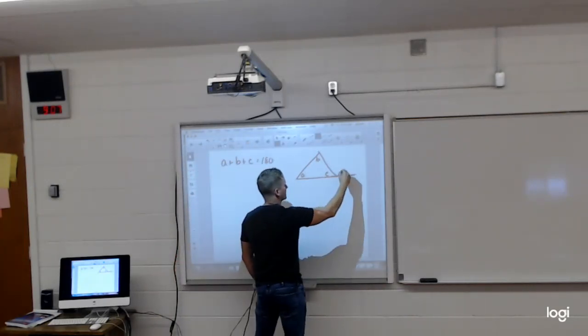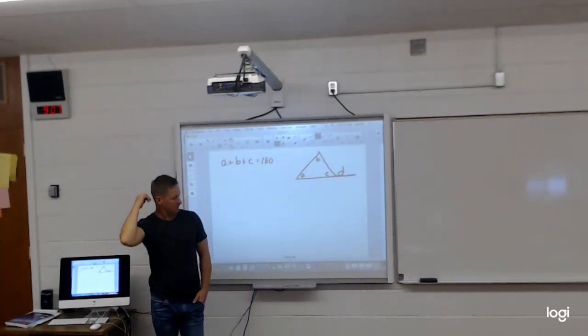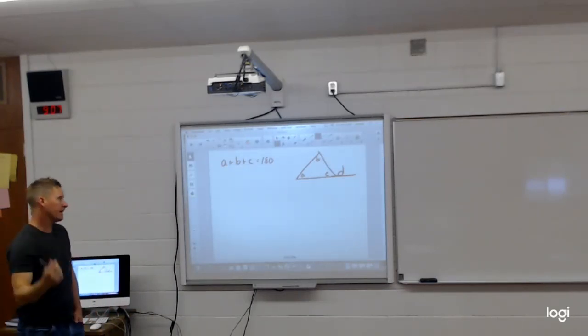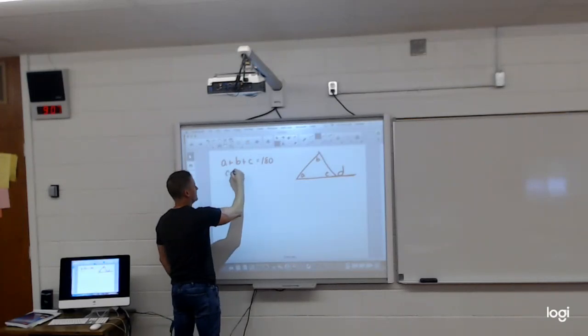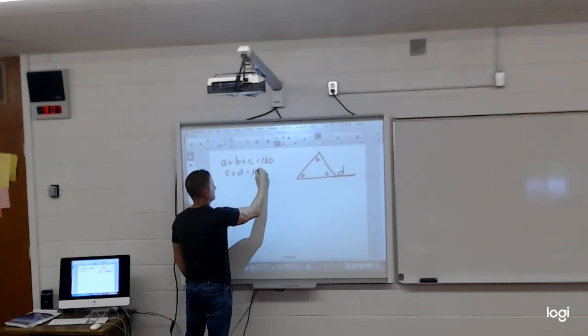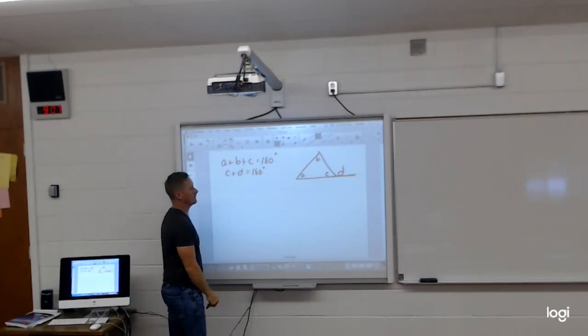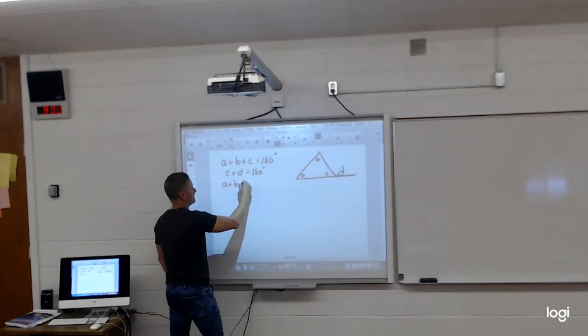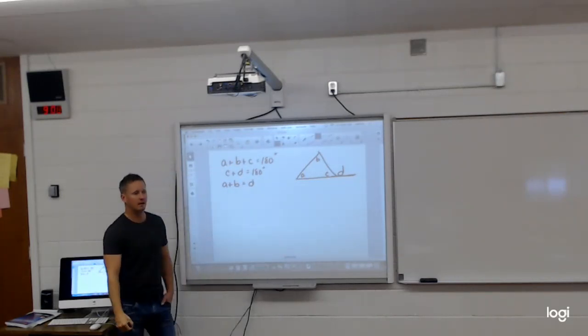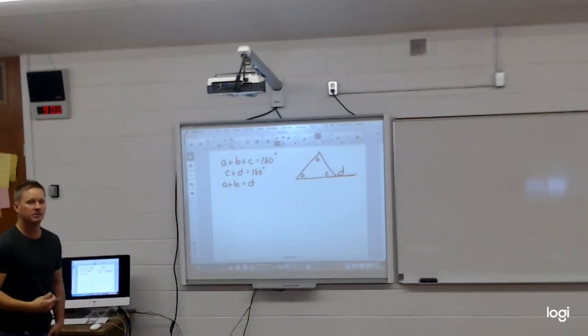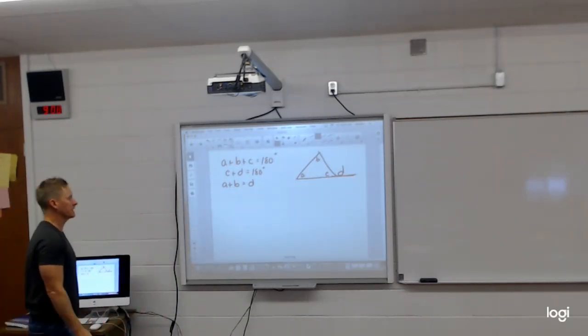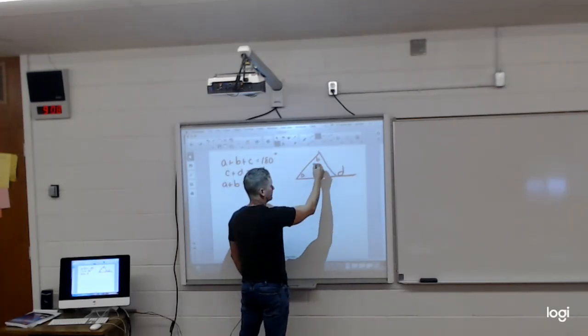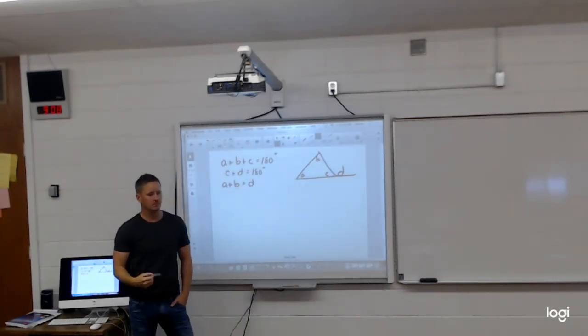And then if I were to extend D out here, what do I know about C and D? They have to equal 180. So if C plus D equals 180 degrees, then we know that A plus B then would have to equal D, right? Not necessary to write that down, but that's what happens. Because if this plus these two equal 180, and this plus this equals 180, then that means that those two would have to equal this guy right here.